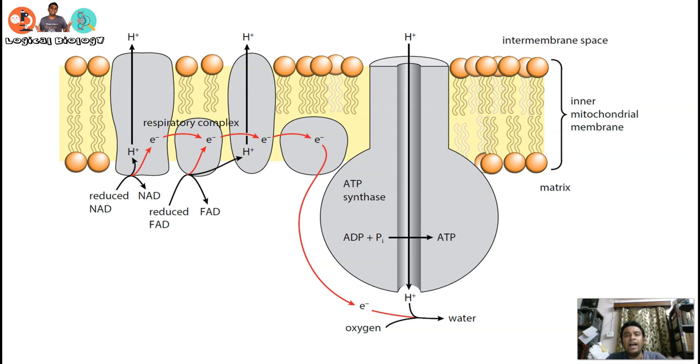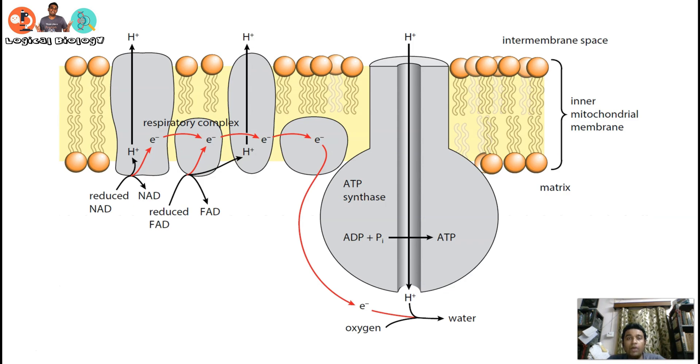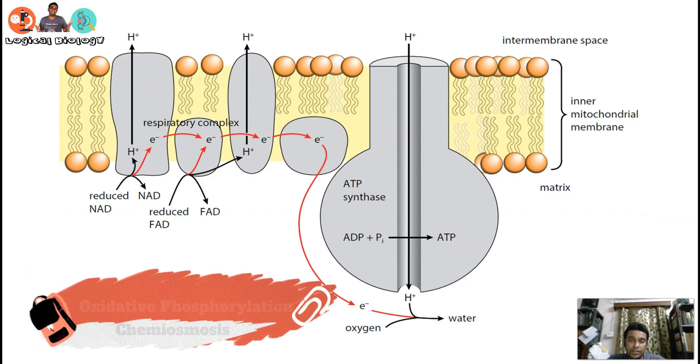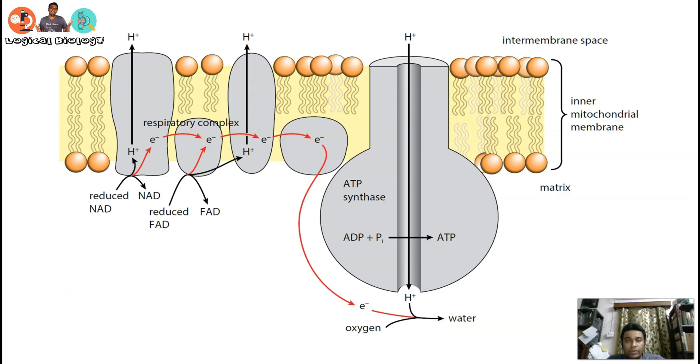If you go back to the question - state how ATP is synthesized in the mitochondria - that means they are talking about oxidative phosphorylation. Let's see what points we need to take into consideration.